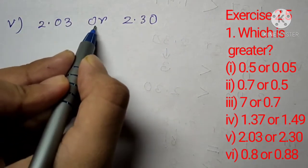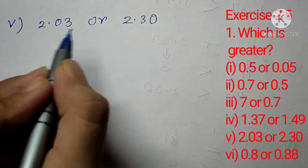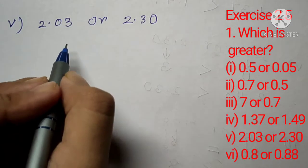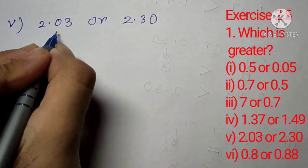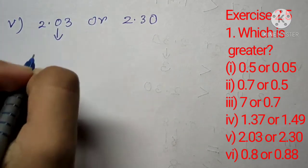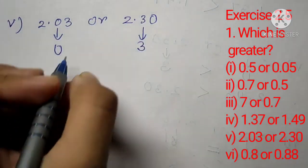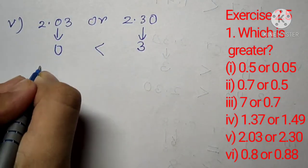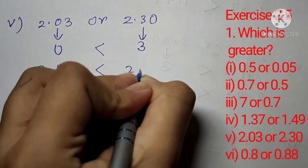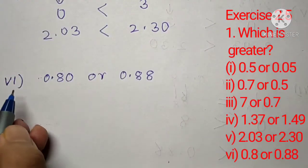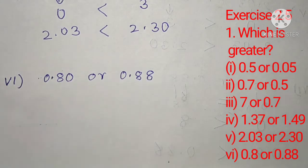Question number 1, part 5: which is greater, 2.03 or 2.30? Both numbers have 2 on the left hand side of the decimal point, so we compare the right hand side. Starting from the 10th place, this number has 0 and this number has 3. Since 3 is greater than 0, we can say 2.03 is smaller than 2.30.